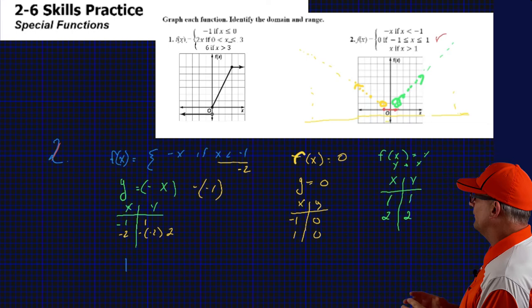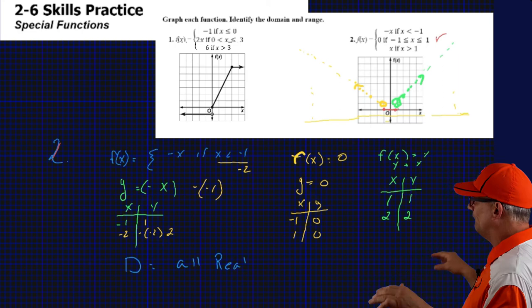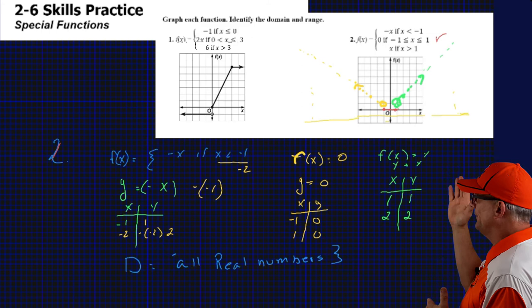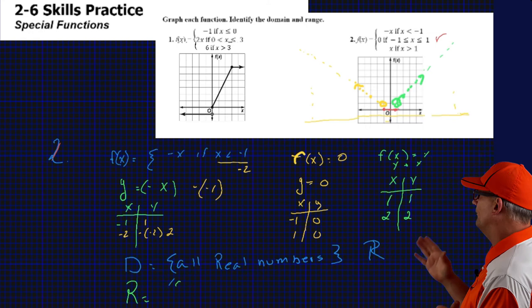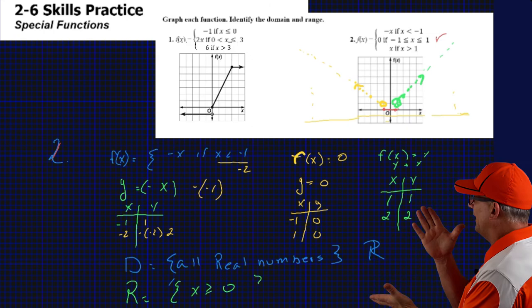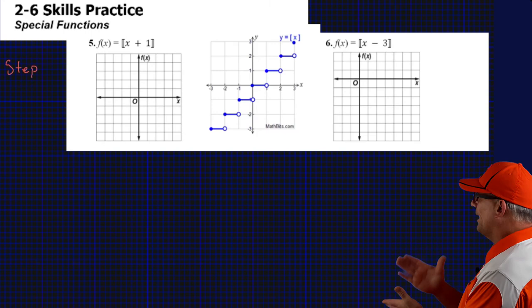Now let's talk about domain and range for number 2. You can see that the x-axis, no matter how far you draw it out from negative to positive infinity, if you draw up to the lines you will intersect them at some point. So the domain is going to be all real numbers. The range is going to start at zero — y is going to be equal to zero to positive infinity.